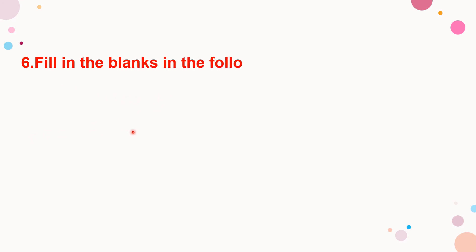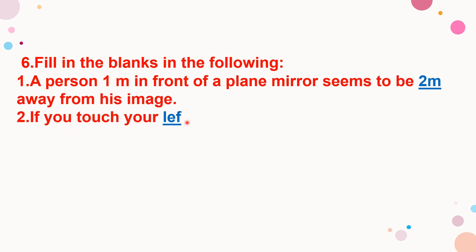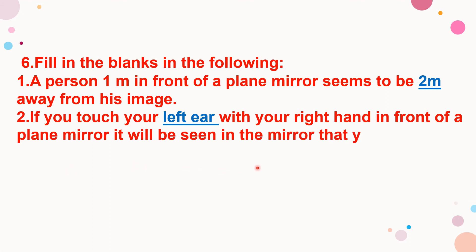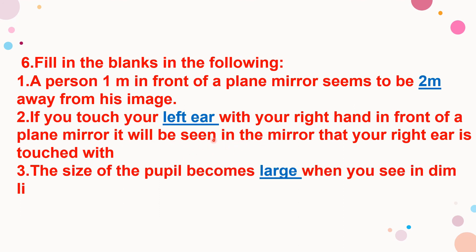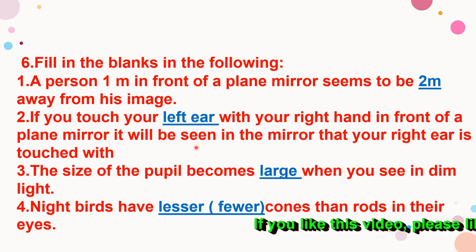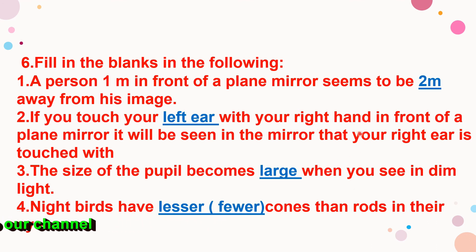Fill in the blanks. A person 1 meter in front of a plane mirror seems to be 2 meters away from his image. If you touch your left ear with your right hand in front of a plane mirror, it will be seen in the mirror that your right ear is touched with your left hand. This is the phenomenon of lateral inversion — left hand becomes right hand and right hand becomes left hand.